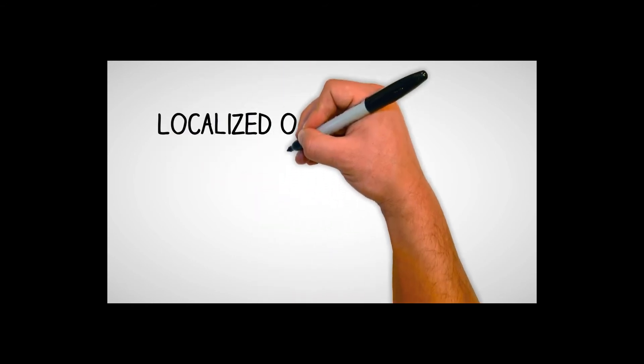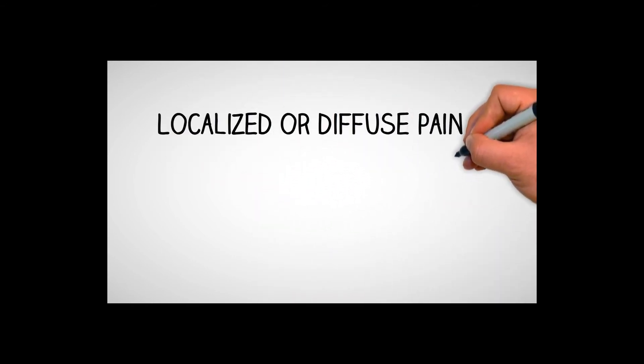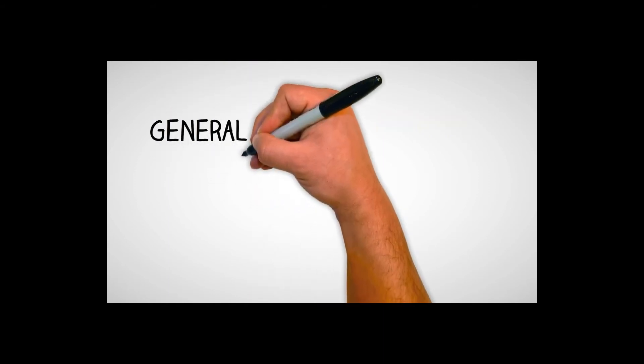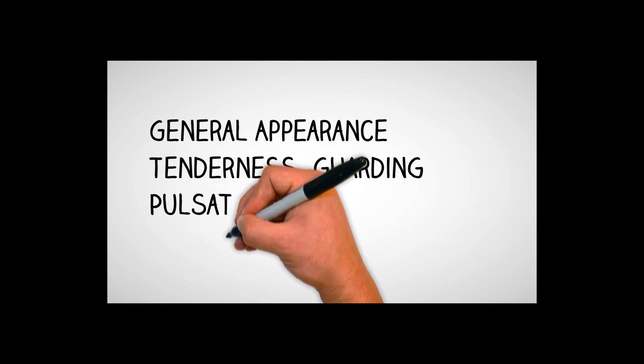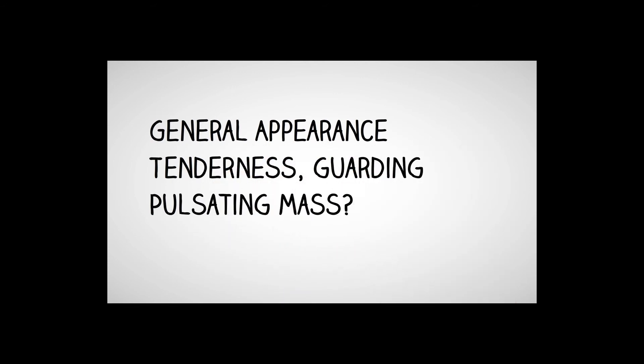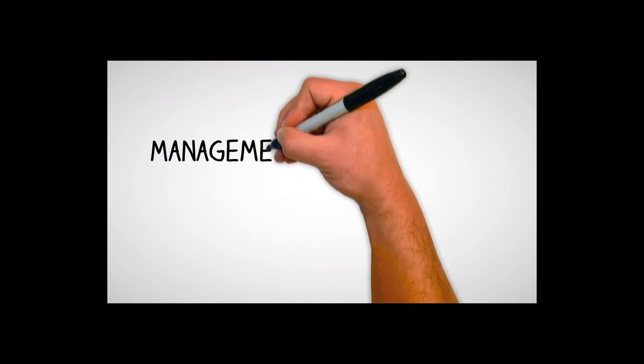What are some of the key assessment findings when you're looking at patients? You're going to have localized or diffuse pain. Abdominal organs really have receptors for pressure, not necessarily for pain, but you're going to see pain for other reasons. Look at the general appearance of your patient — do they have tenderness to the abdomen, guarding, even rebound tenderness if you know how to do that, or pulsating masses for that AAA we talked about?